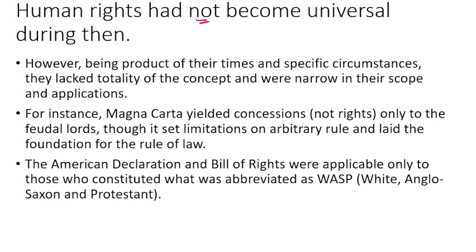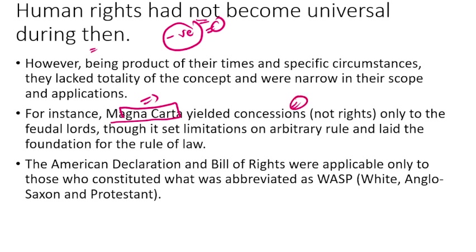The reason human rights were not yet universal is that these documents came with negatives. Magna Carta gave concessions only to feudal lords — it limited the arbitrary rule of the king and laid the foundation for rule of law, but these were concessions, not rights, and only feudal lords received them.